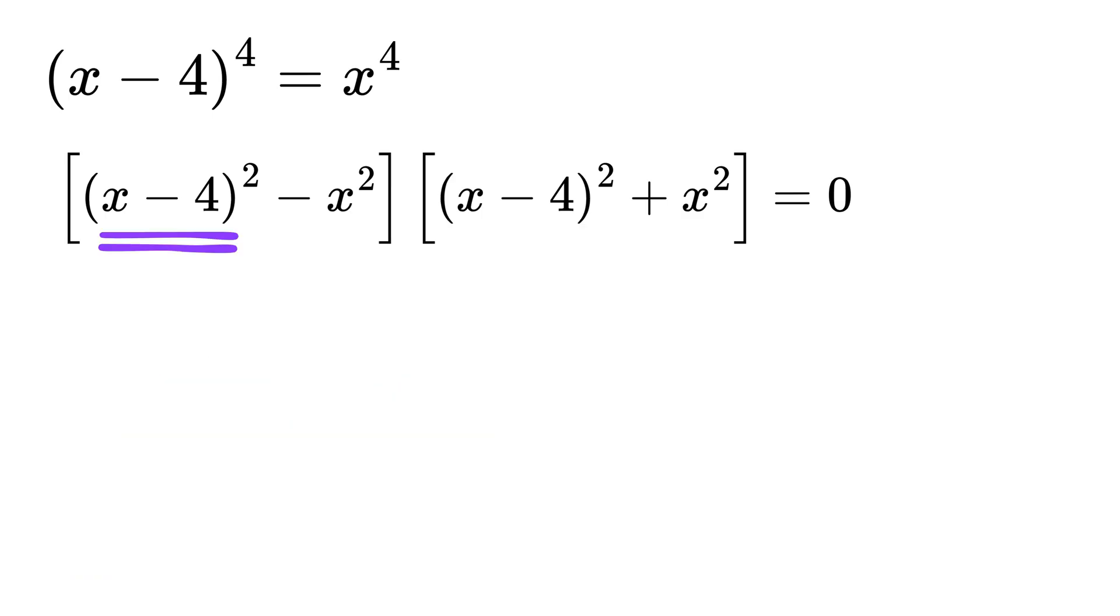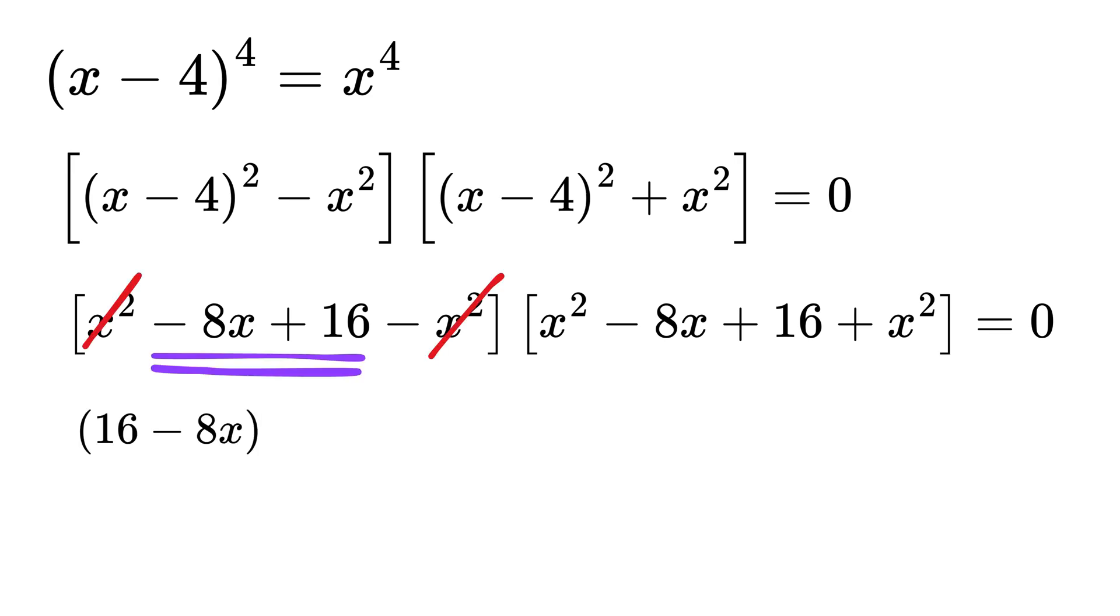Now expand this x minus 4 square. We get inside bracket x square minus 8x plus 16 then minus x square. After that, again inside the bracket, expand this to get x square minus 8x plus 16 then plus x square and this is equal to 0. x square gets cancelled out from this bracket and we are left with 16 minus 8x and from this bracket we have x square plus x square which is 2x square. Then write minus 8x plus 16 and that is equal to 0.